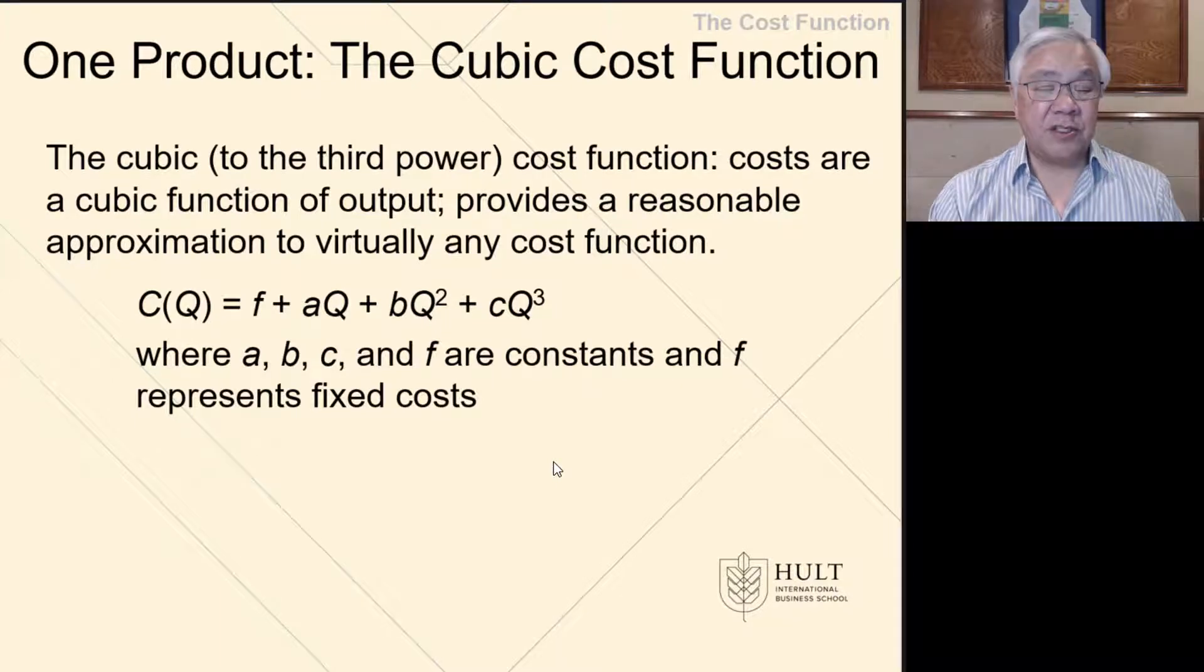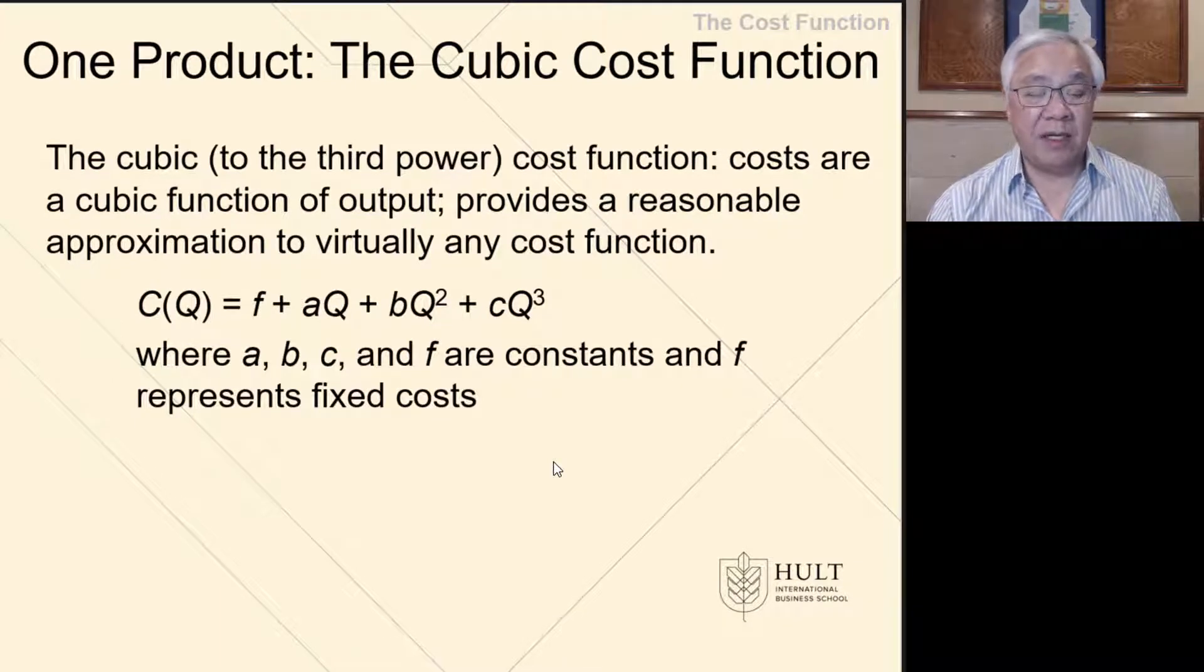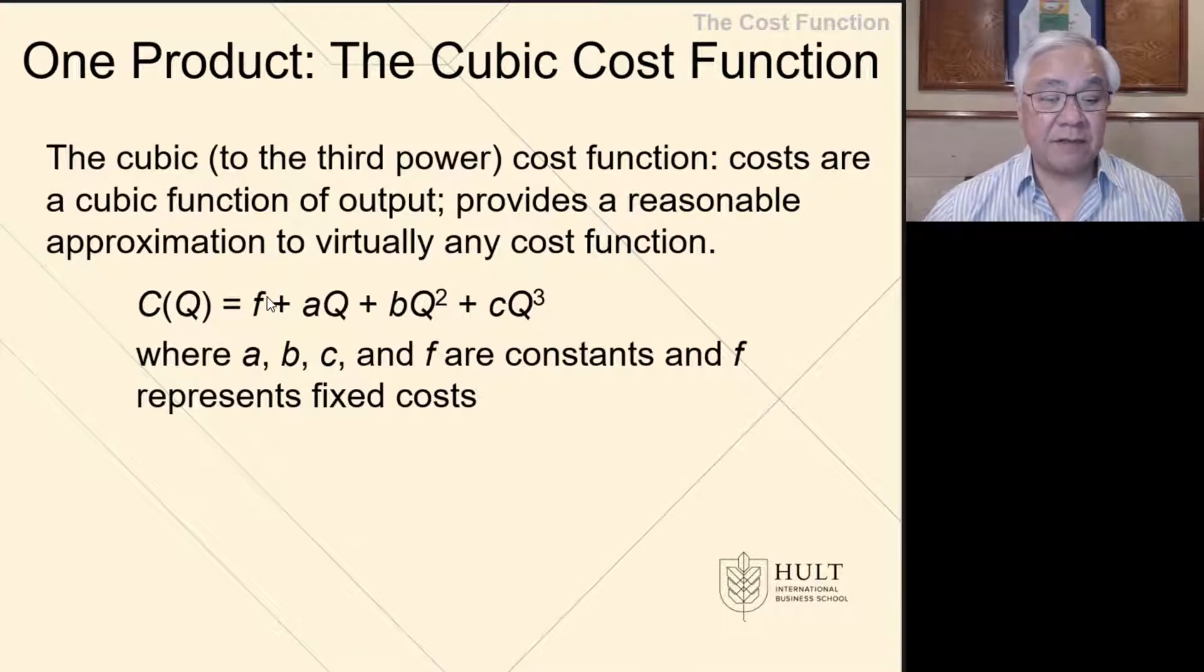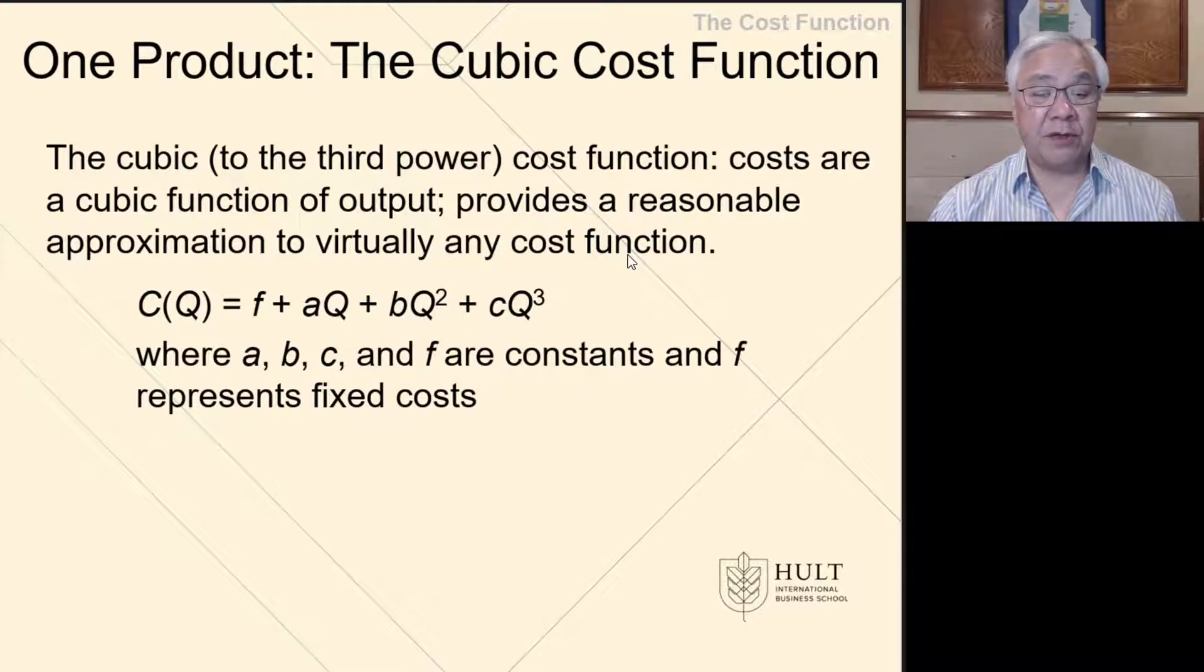This is a cubic cost function for a one-product company, where the cost at a certain quantity equals F plus AQ plus BQ squared plus CQ cubed, where F, A, B, C are all constants. F itself is a unique number because it is the fixed cost. So it's fixed cost plus these constants in front of the variables Q, Q squared, and Q to the third power.